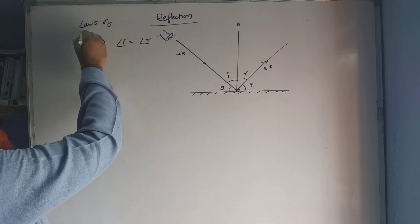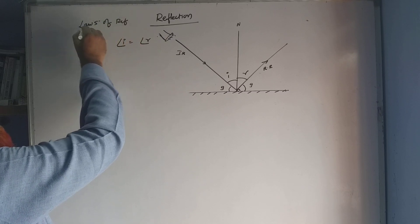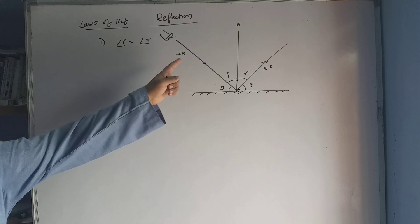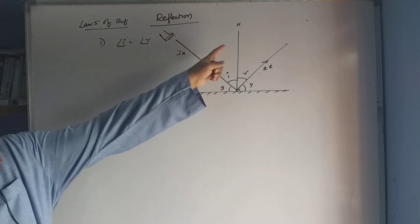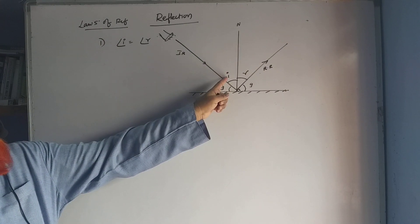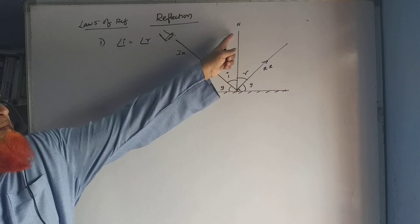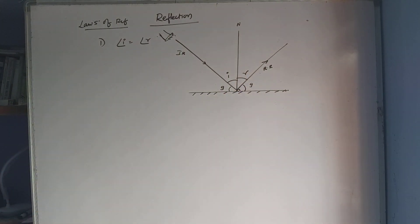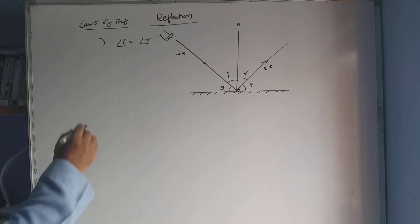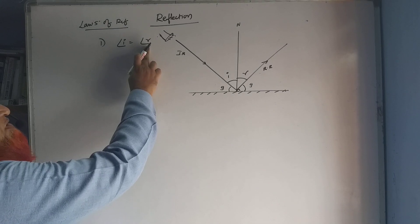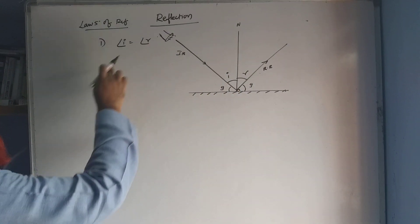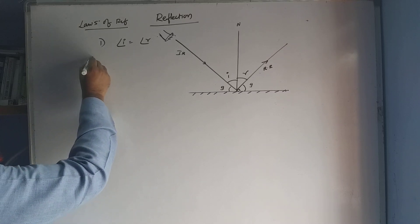The first law of reflection states that the angle made by the incident ray with the normal is equal to the angle made by the reflected ray with the normal. Both the angle of incidence and the angle of reflection are going to be the same.